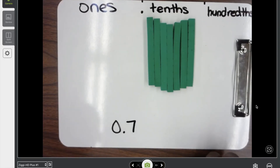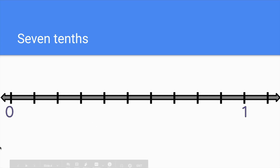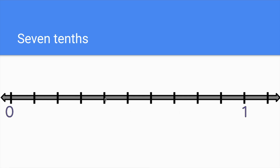I don't have any hundredths — I don't even have to write that zero because there's nothing over there. This number line is broken into ten parts between zero and one, so that means this is one tenth, two tenths, three tenths, four tenths, five tenths, six tenths — seven tenths is right here.